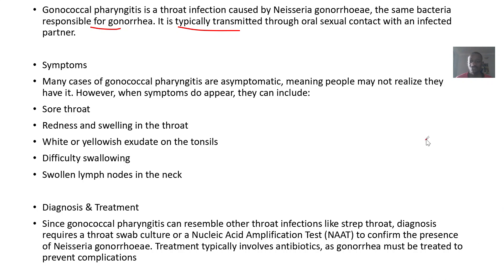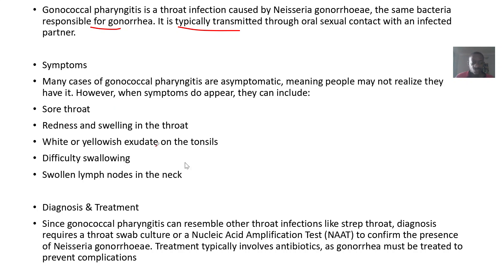It is typically transmitted through oral contact with an infected partner. Many cases of gonococcal pharyngitis are asymptomatic, meaning people may not realize they have it. However, some symptoms may include sore throat, redness and swelling in the throat, white or yellow exudates on the tonsils, difficulty swallowing, and swollen lymph nodes in the neck.